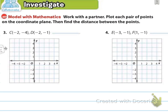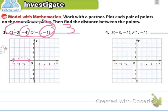For problems three and four, they gave us both the ordered pairs and the graph, asking us to plot each pair of points and find the distance. For problem three, knowing the x-values are both negative two, we're finding the distance between y-values negative four and negative one. From negative four to negative one is one, two, three units. You plot negative two comma negative four and negative two comma negative one, draw the line, and count three units.